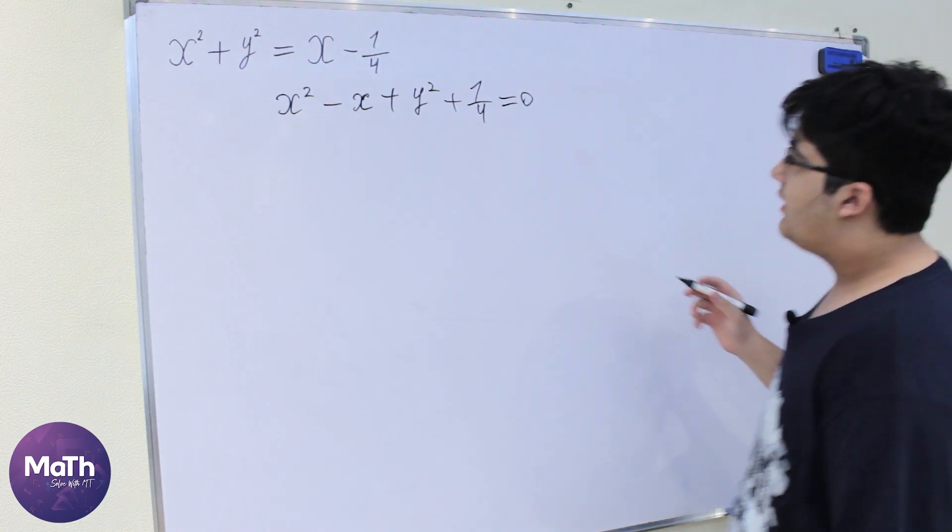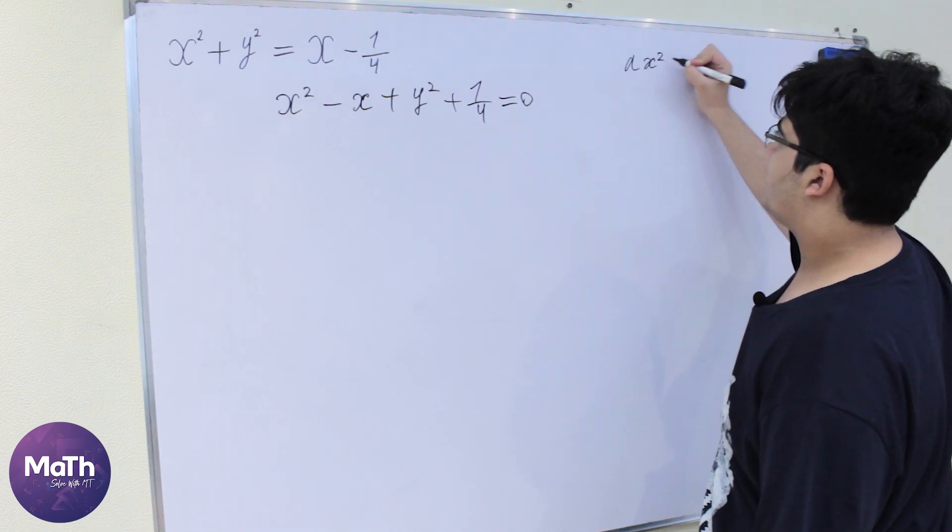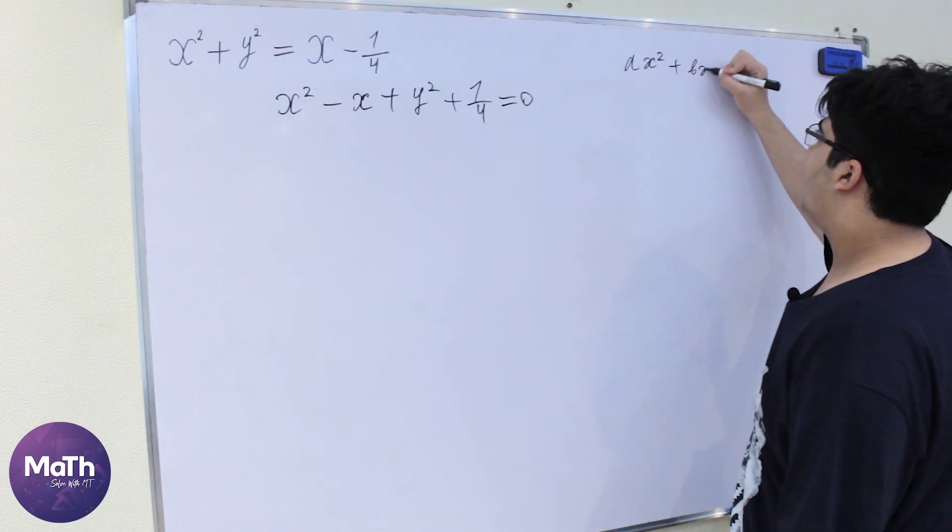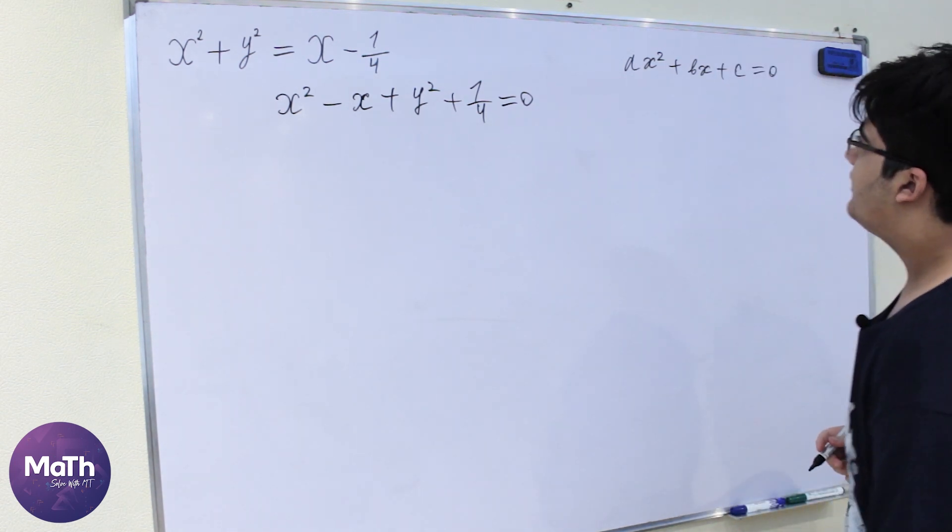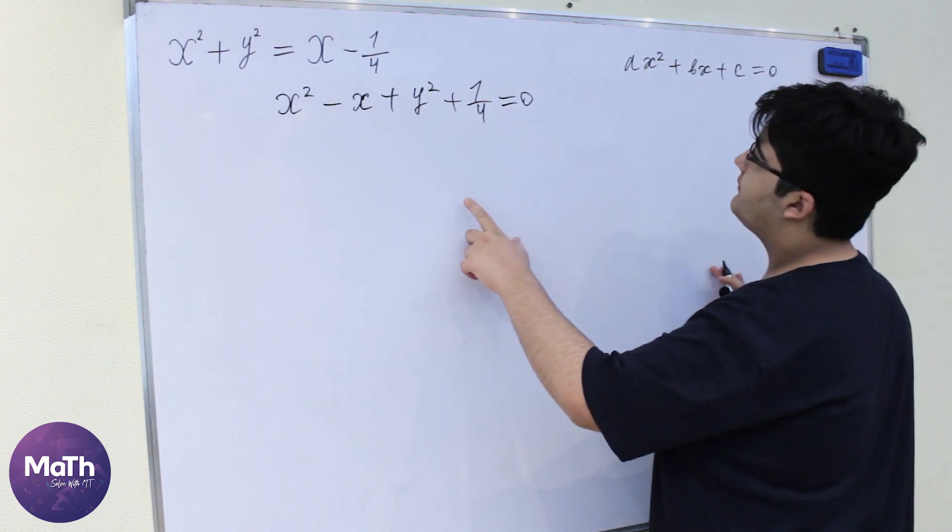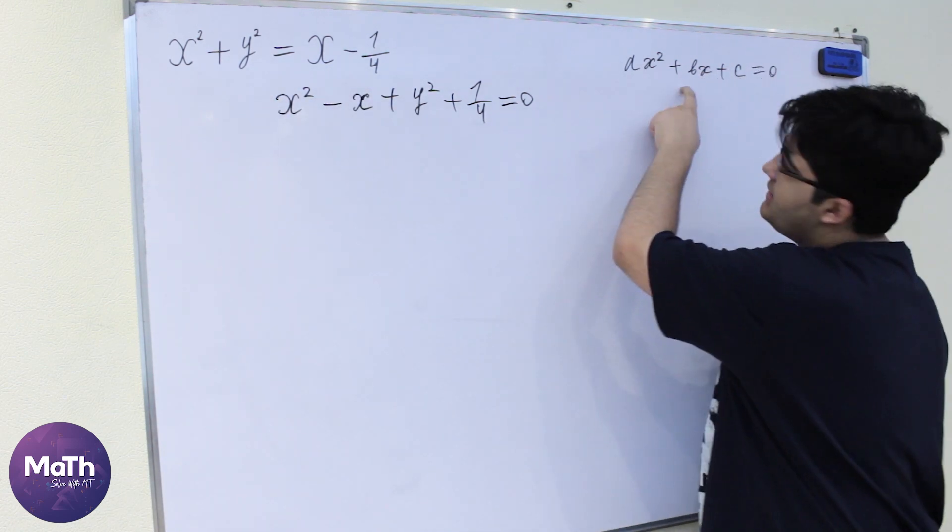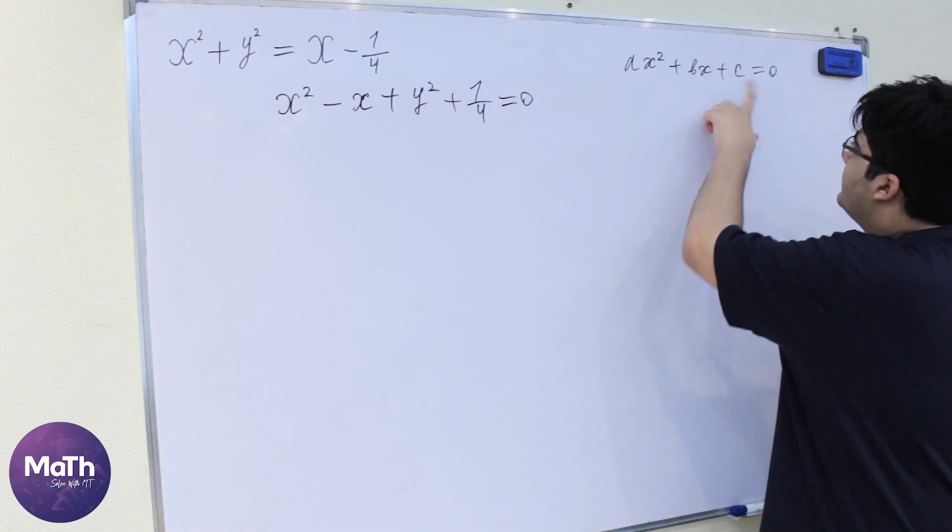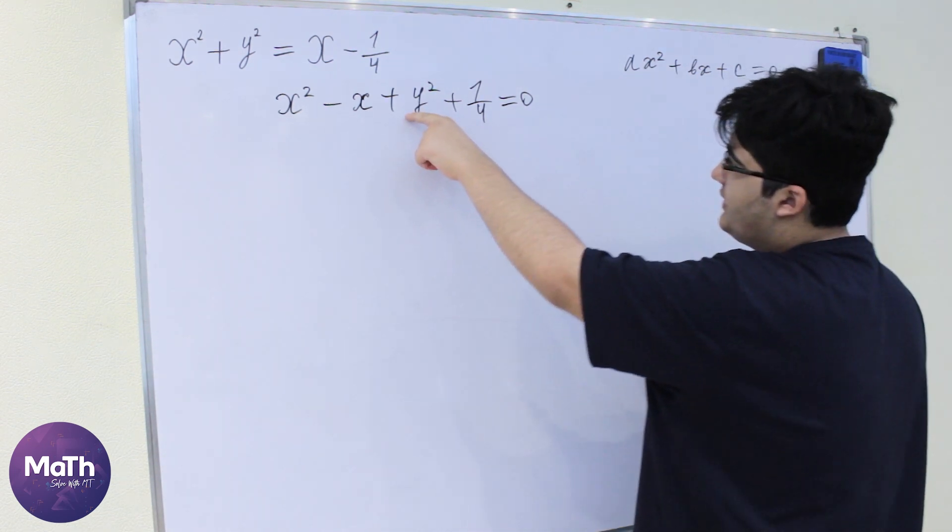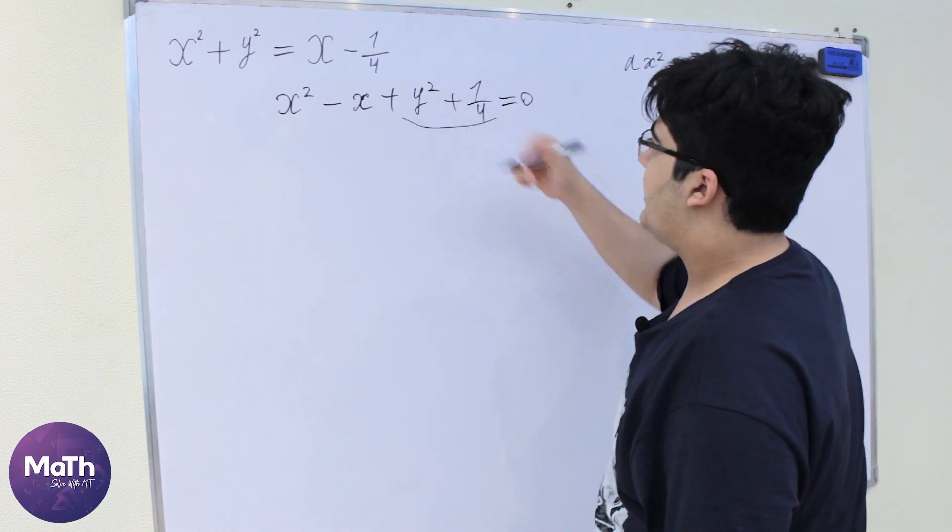So let's say this is ax squared plus bx plus c equal to 0. Let's say like here a is equal to 1, b is equal to minus 1, and here let's say y squared plus 1/4 is a constant.